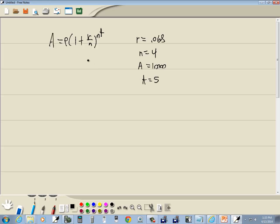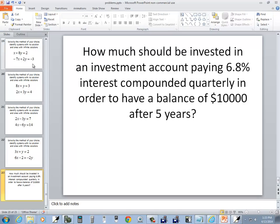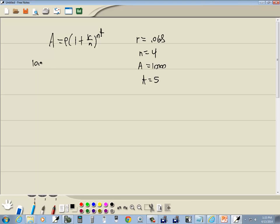Then it says how much should be invested, so that's P. Let's plug in what we're given. Is A $10,000? Yeah. So $10,000 for the A, P, 1 plus R which is .068 divided by N which is 4, raise the NT power which is 4 times 5.